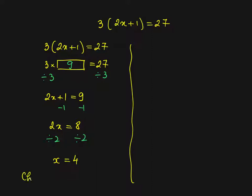Now to make sure that I'm correct I can check by substituting 3 brackets 2 times 4 plus 1. So I'm substituting it back. I get 3 times 8 plus 1. 3 times 9 is 27. So it's correct.